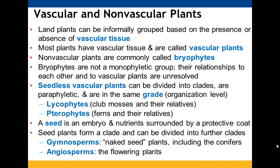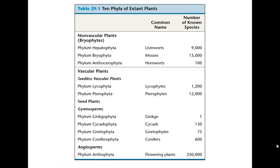Seeds are your embryos surrounded by nutrients and a protective coat. The seed plants are their own clade divided into gymnosperms and angiosperms. Gymnosperms have naked seeds — the conifers — while angiosperms are your flowering plants.